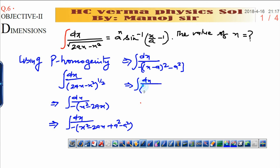Take negative sign inside. You will get bracket a square minus x minus a square.